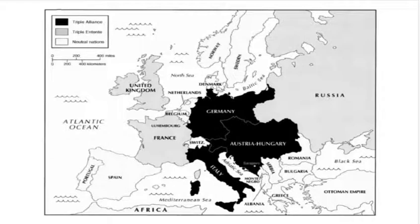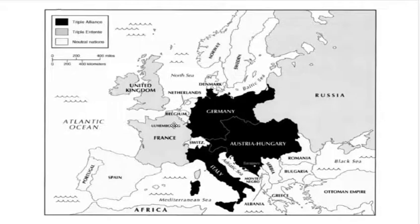Once war broke out, Germany found itself in a tough spot strategically. Germany was basically fighting enemies on both sides — on the eastern side they had conflict with Russia, and to the west their border ran along France. Dividing your forces is the last thing you want to do, as it weakens your strength. The German army was for quite some time extremely strong, so Germany needed to think of a plan.